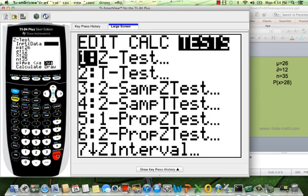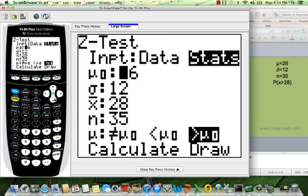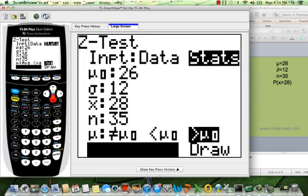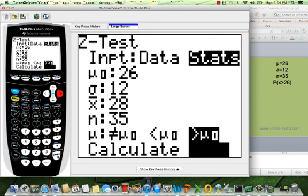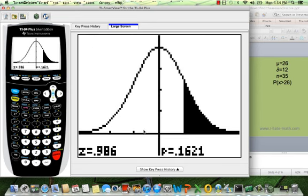I can go again to Z-test. The same thing is going to be there. And look, I can click on draw. And how perfect is that? Here is showing us that the P-value or the probability is 0.1621.